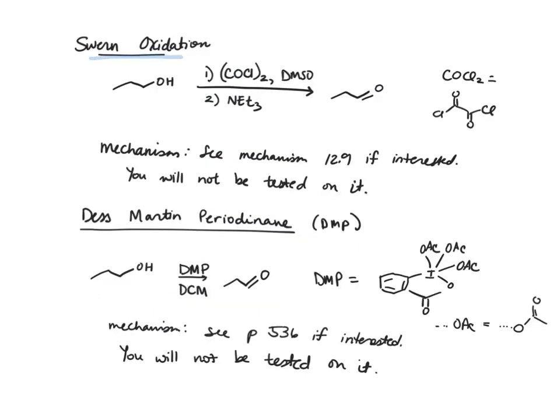Our next reaction is the Swern oxidation. Here we take COCl2, which has this structure, and treat our alcohol with that and DMSO, our solvent. And then in a second step, triethylamine, and this stops at the aldehyde as well. The mechanism for this reaction is mechanism number 12.9. You're welcome to look at it if you're interested, but it's a really long mechanism, so I don't want to go over it in the lecture. But note that you will not be tested on this mechanism, so this is just for your own interest if you want to go to mechanism 12.9.